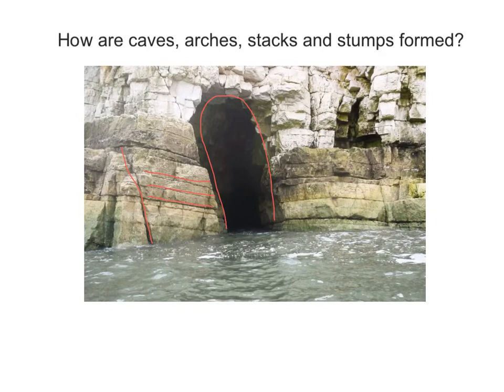At the same time, on a cliff like this, because it is chalk, you may have processes of solution or corrosion operating to weaken the cliff further. So processes of weathering are important here too.